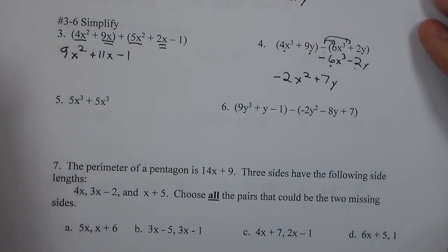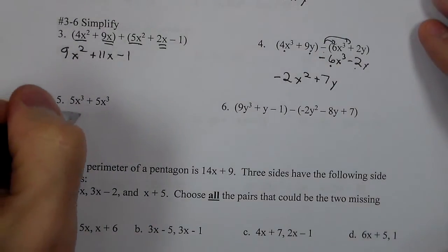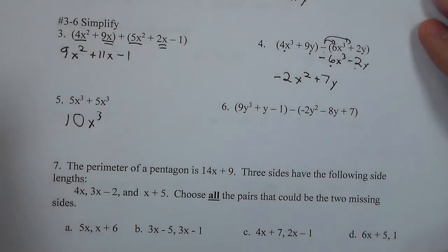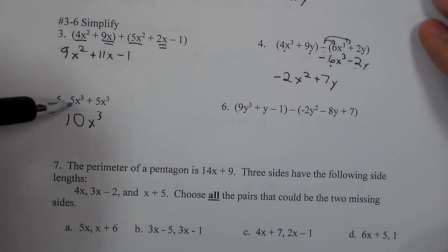For number 5, combining like terms again — I have 5 and 5 so that's going to be 10, and it's going to be x to the 3rd because you leave the exponents the same. X to the 3rd is saying how many we have — 5 and 5 gives us 10.